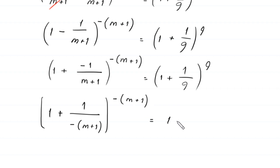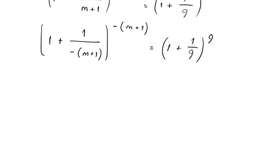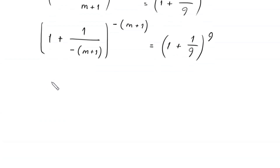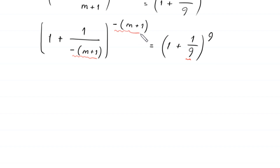So the expression on the left hand side becomes 1 plus 1 over negative m plus 1, whole to the power negative m plus 1. At the right hand side we have 1 plus 1 over 9, whole to the power 9. So we can equate the exponents: negative m plus 1 equals 9.